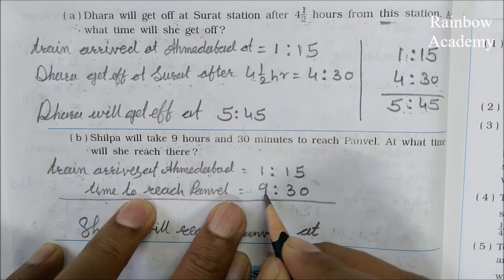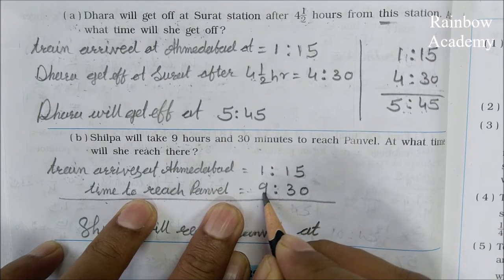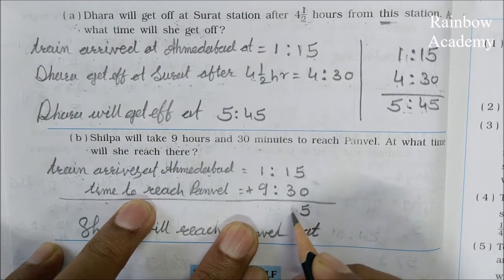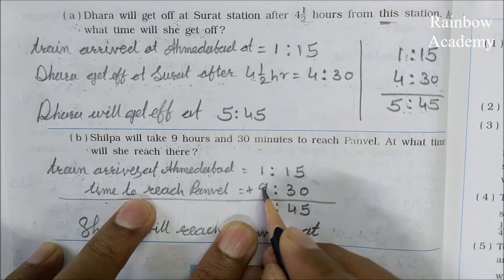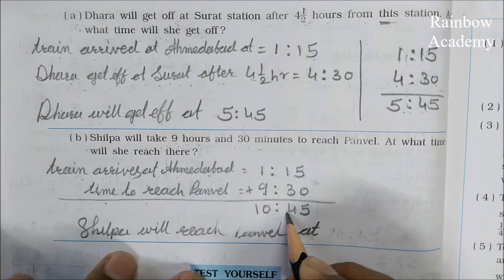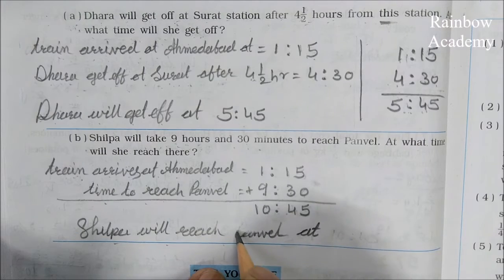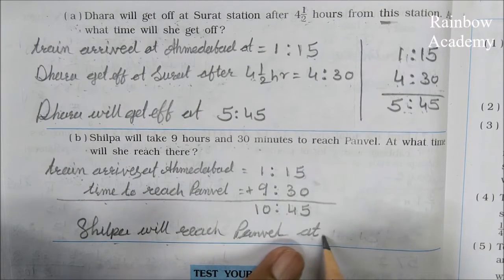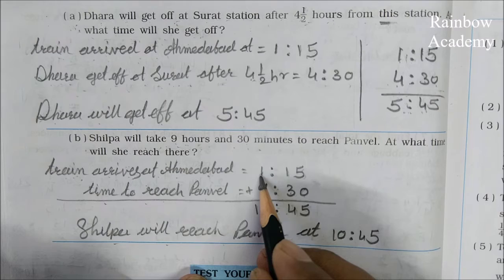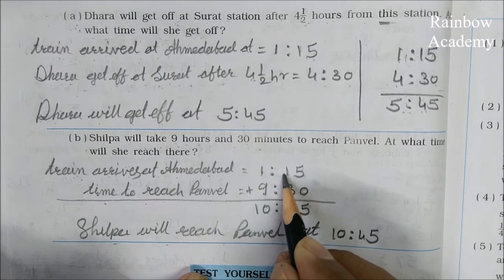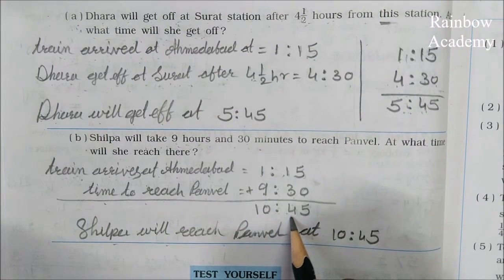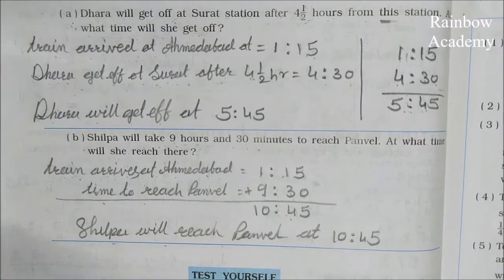We add 1 hour 15 minutes plus 9 hours 30 minutes. 5 plus 0 is 5, 1 plus 3 is 4, 1 plus 9 is 10. So the answer is 10:45. Silpa will reach Panwell at 10:45, that is 10 hours 45 minutes after starting from Ahmedabad at 1:15 PM.